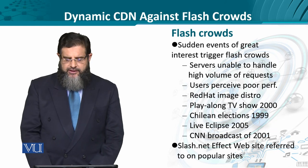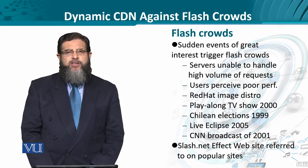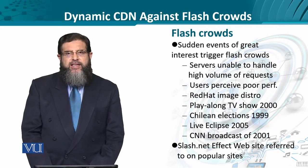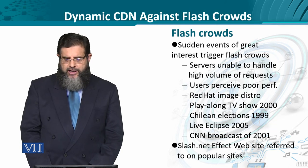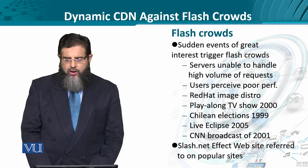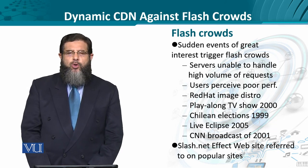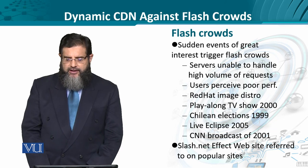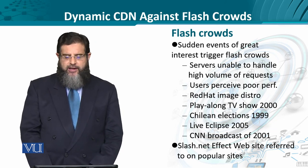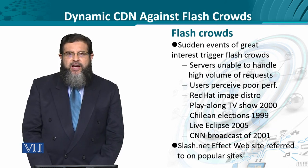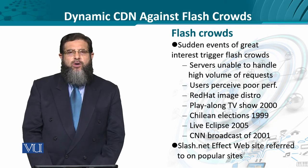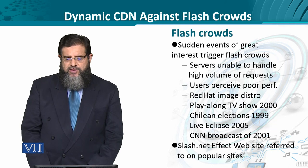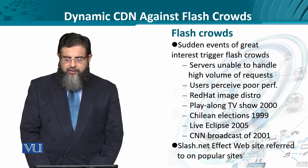There are examples from history: when the Red Hat Linux image distribution was announced, the website offering it got overwhelmed. Similarly, the Playalong TV show streamed back in 2000 was bogged down by a surge of user interest. The Chilean presidential elections of 1999, the live solar or lunar eclipse of 2005, and CNN's broadcasting of 9/11 images of the Twin Towers coming down are all examples where flash crowds are created on the fly.